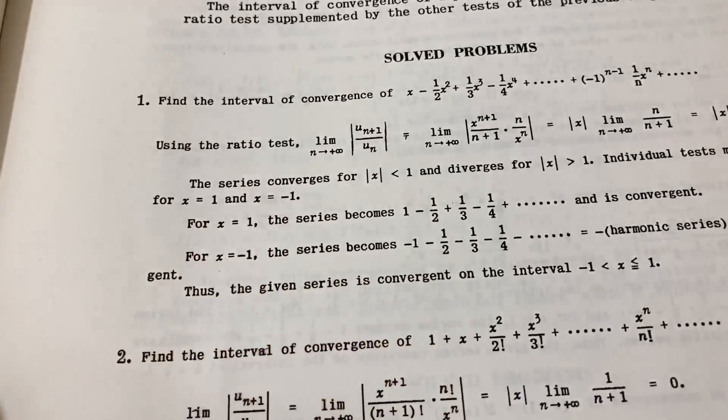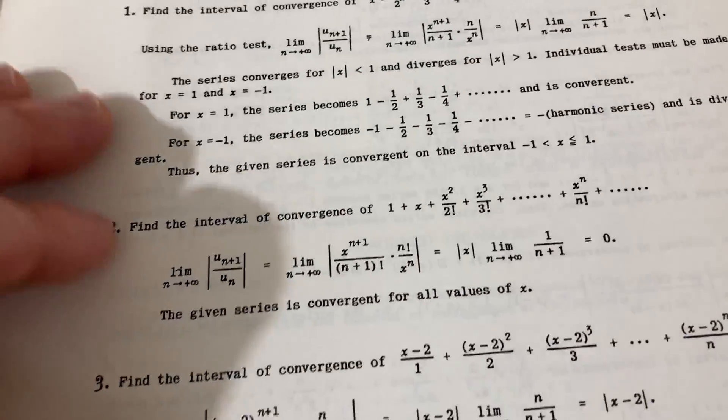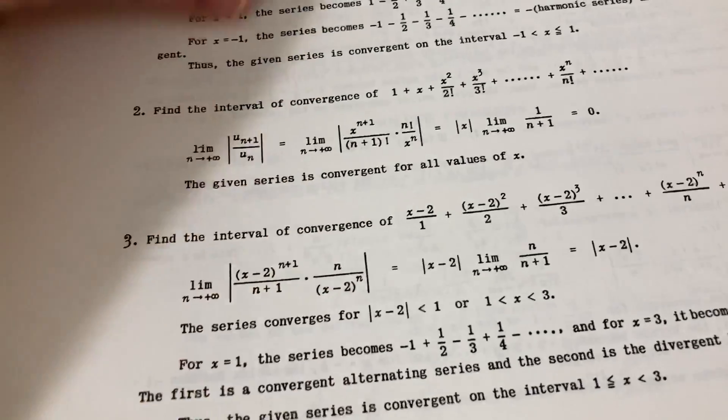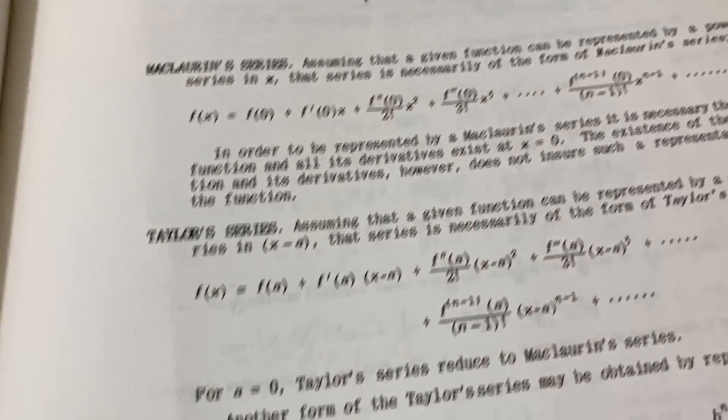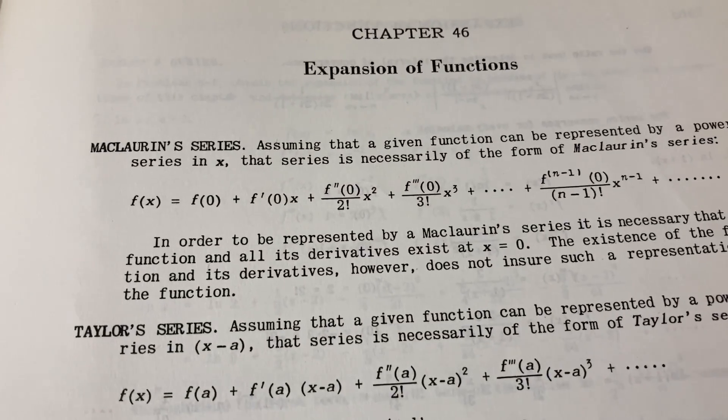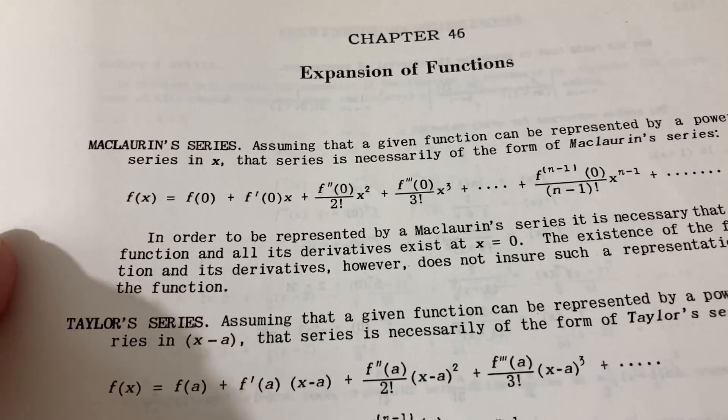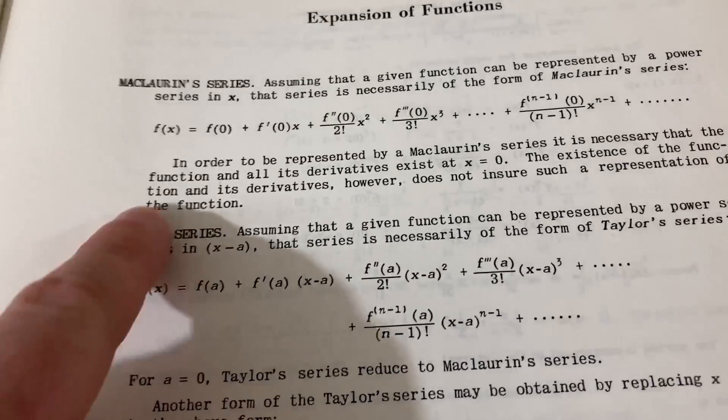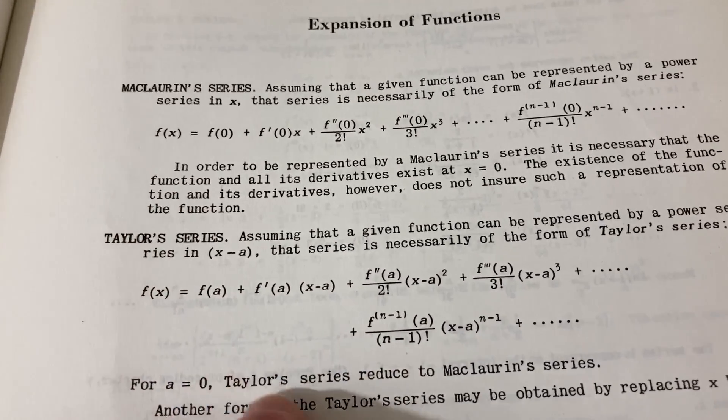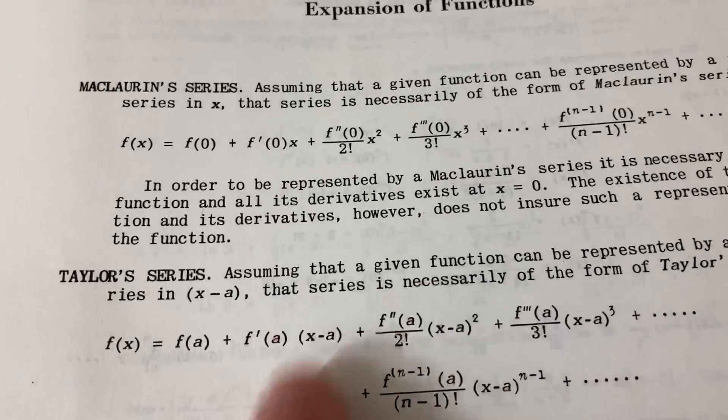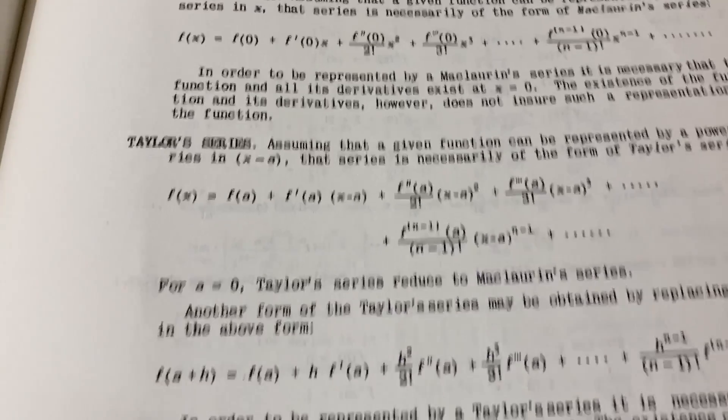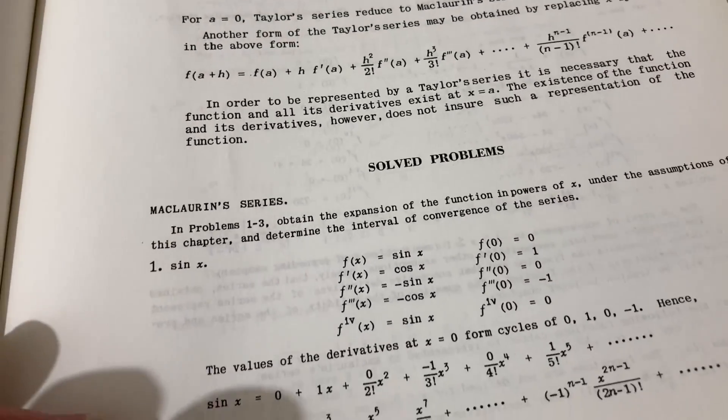So there are some little bit of, there's some slight gaps, but it's really clean. I like the layout. How about that type setting? Very interesting type setting. Expansion of functions. Maclaurin series. So Maclaurin series is basically a Taylor series centered at zero. And then here's the Taylor series. So if you put A equals zero in this formula, you get this one up here. Then here you have some solved problems.